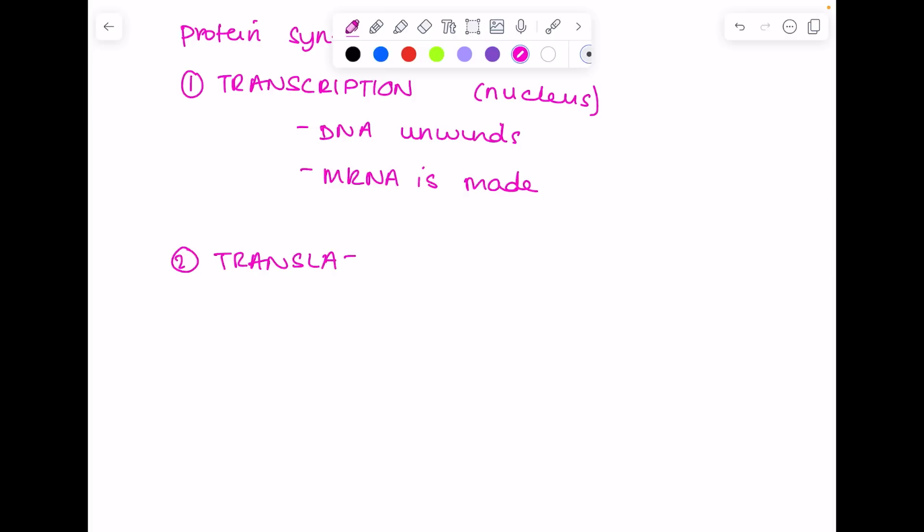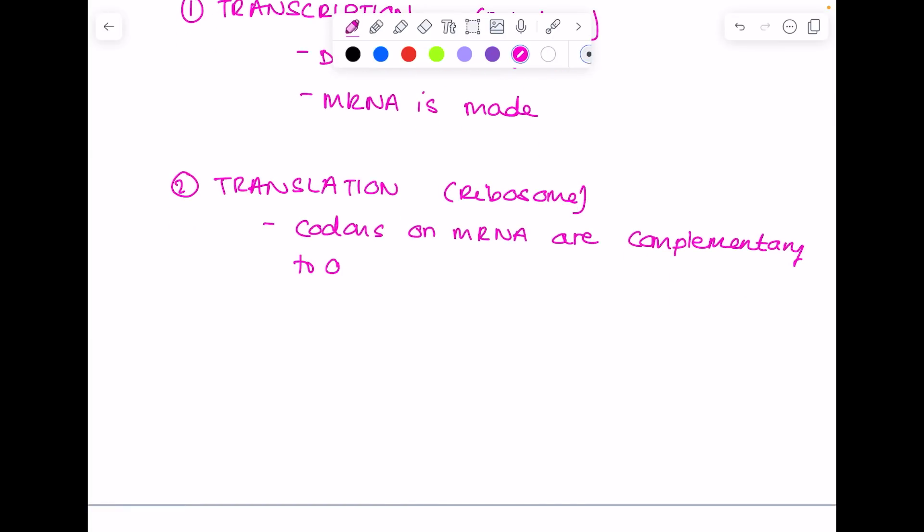The next stage is translation. Always point out where these things are happening - it's in the ribosome. Codons on mRNA are complementary to anticodons on tRNA. Amino acids join to form a protein.